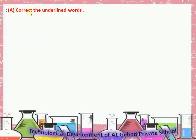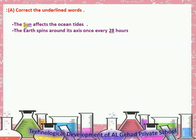Letter A: Correct the underlined words. Number 1: The sun affects the ocean tides. Answer: the moon. Number 2: The earth spins around its axis once every 28 hours. Answer: 24.